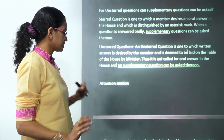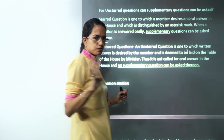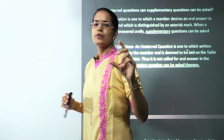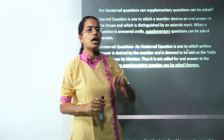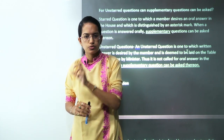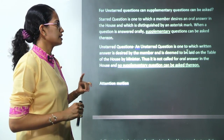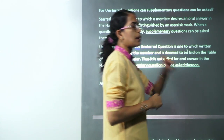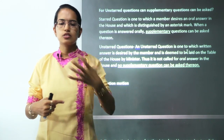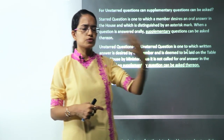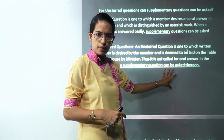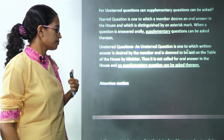Three types of questions are asked in parliament: starred, unstarred, and short notice questions. Starred questions are oral questions; unstarred questions are written questions; short notice questions require urgent information. For starred questions, supplementary questions can be asked since they are oral — after a person speaks, a supplementary or add-on question can be brought in. For unstarred questions, supplementary questions cannot be asked. That is a very important distinction to remember.